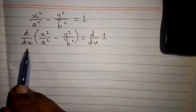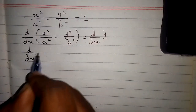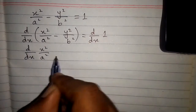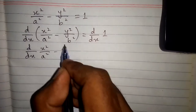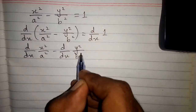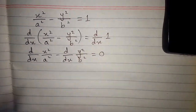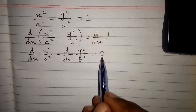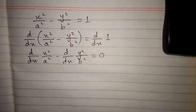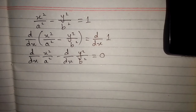Now we will apply d/dx on both terms. So we have d/dx of x²/a² minus d/dx of y²/b² is equal to 0, since the derivative of 1 — or any constant — is 0.